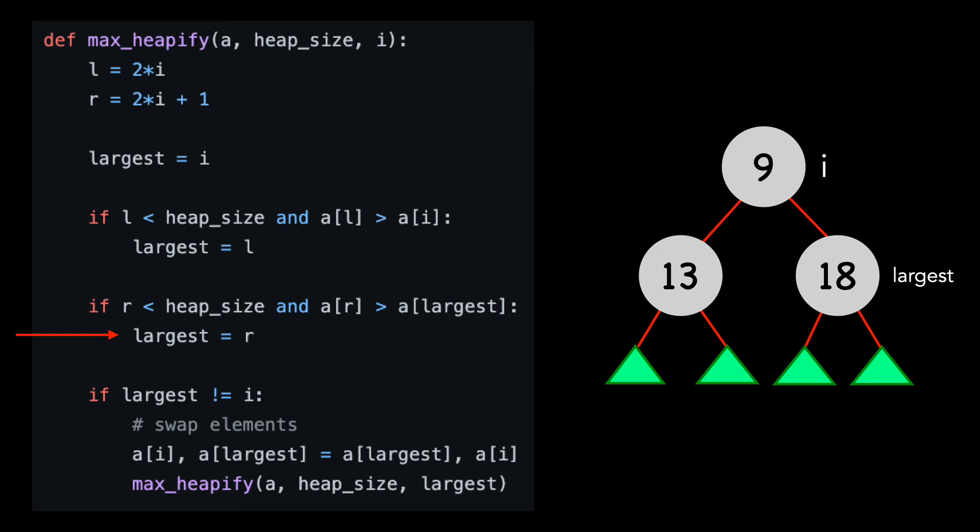Lastly, we see that the largest is no longer equal to i, so we swap the two values. And finally, we call max heapify with this new index in a recursive manner. You can see how it will float down until it's in its proper place.